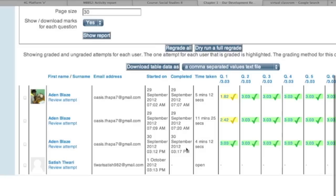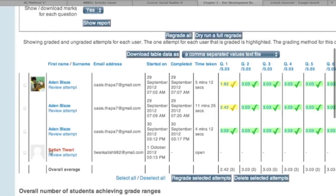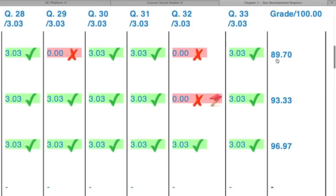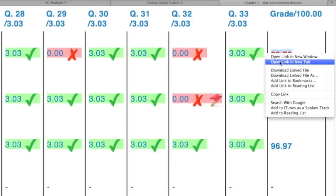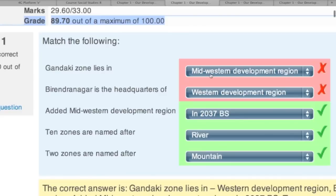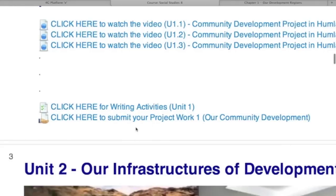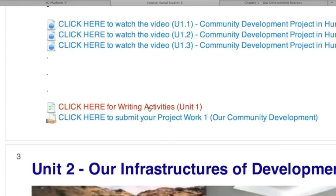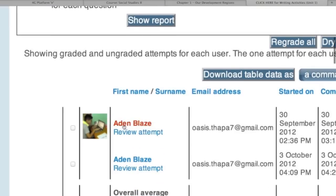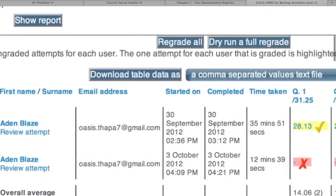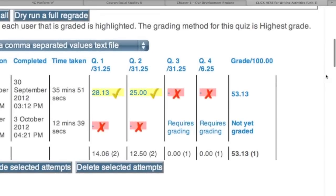You can see another student here who opened this chapter activity on 3rd October in the evening, but he didn't attempt. Now let's look at how many questions are correct and incorrect. We can do it just by clicking each of these attempts, and here we can have the complete review of the activities. About the writing activities, this student has attempted this writing activity twice. In the first attempt he got 53% with the two answers incorrect, and his second attempt has not been marked by the teacher yet, because it says requires grading and not graded yet.